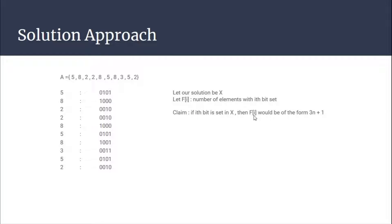So f(i) is always divisible by 3 unless the i-th bit is also set in our result x, in which case it would be 3n + 1. If the i-th bit is set in x, it increments f(i) by one only, while all other occurrences increment by 3. This is the bit representation of each number. The result is 3, and in 3 the 0th and the 1st bits are set, so f(0) and f(1) should be of the form 3n + 1.